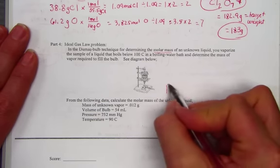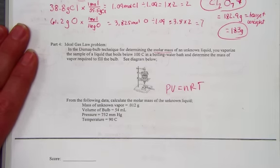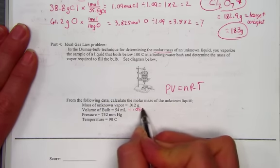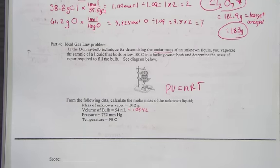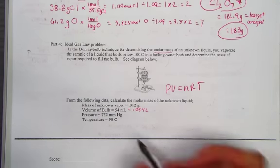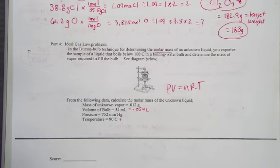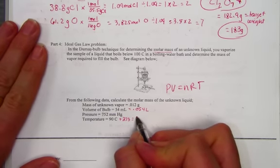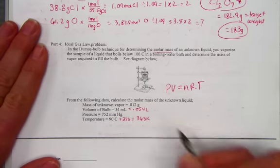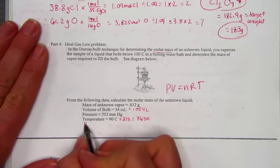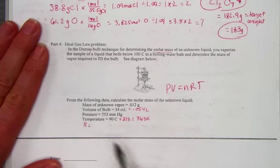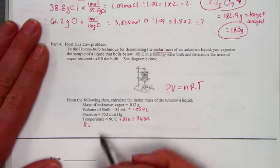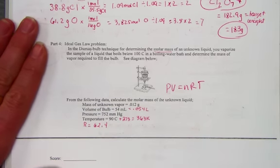Some things to remember when we use PV=nRT, the ideal gas law: volume must be in liters. So when I place that number in, remember it needs to be in liters. Temperature must be in kelvin, so 90 plus 273 gets me 363 kelvin units. And the R constant must match the pressure unit. 752 mmHg, or torr, has an R constant that matches 62.4.